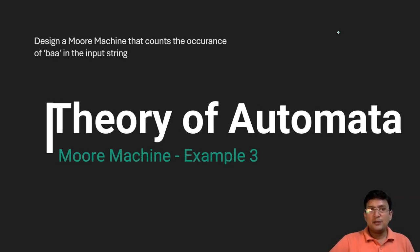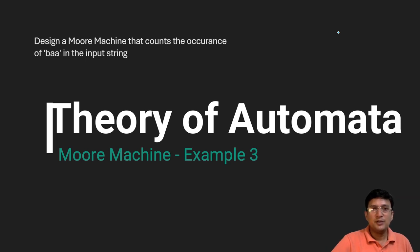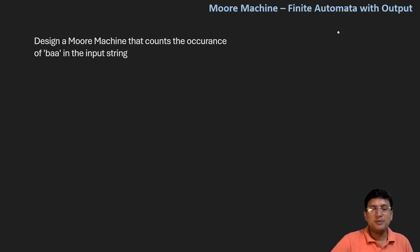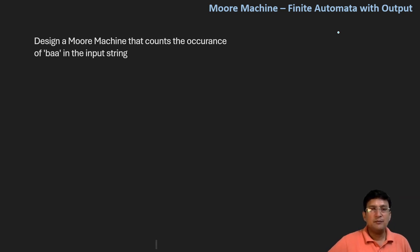Let's see some more examples for the Moore machine. The question is: we have to design a Moore machine that counts the occurrence of BAA in the input string. In the last lecture, we have seen that for construction of the Moore machine, we should first form the DFA. So what would be the DFA for this?